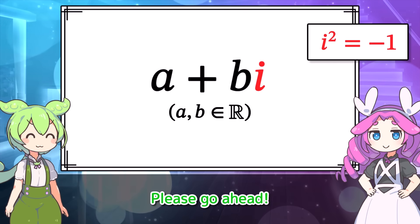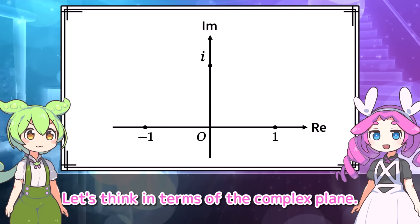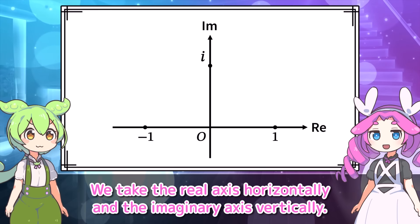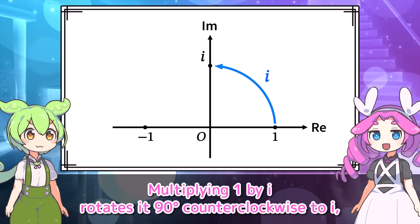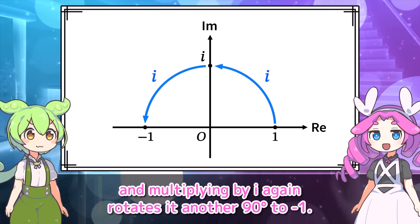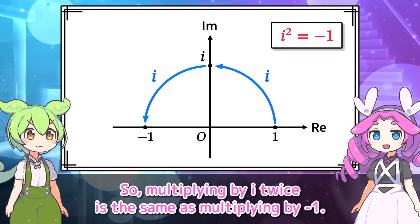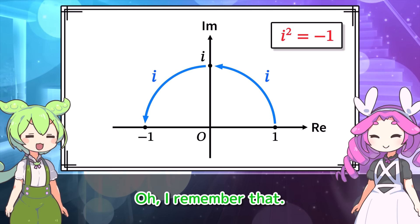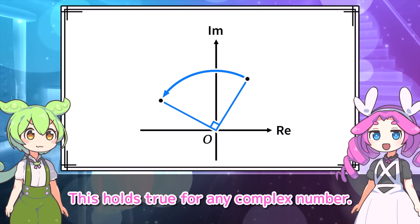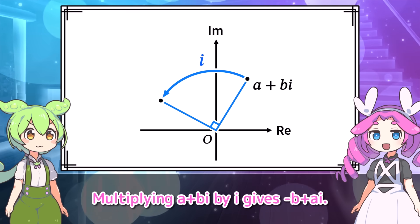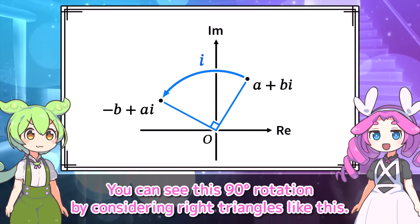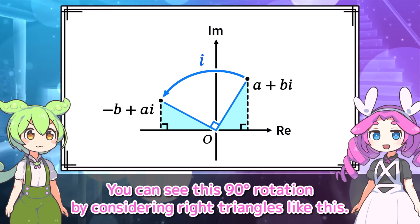Today I'll introduce a method using matrices, which is intuitive to understand. Let's think in terms of the complex plane. We take the real axis horizontally and the imaginary axis vertically. Multiplying 1 by I rotates 90 degrees counterclockwise to I. And multiplying by I again rotates another 90 degrees to negative 1. So multiplying by I twice is the same as multiplying by negative 1.